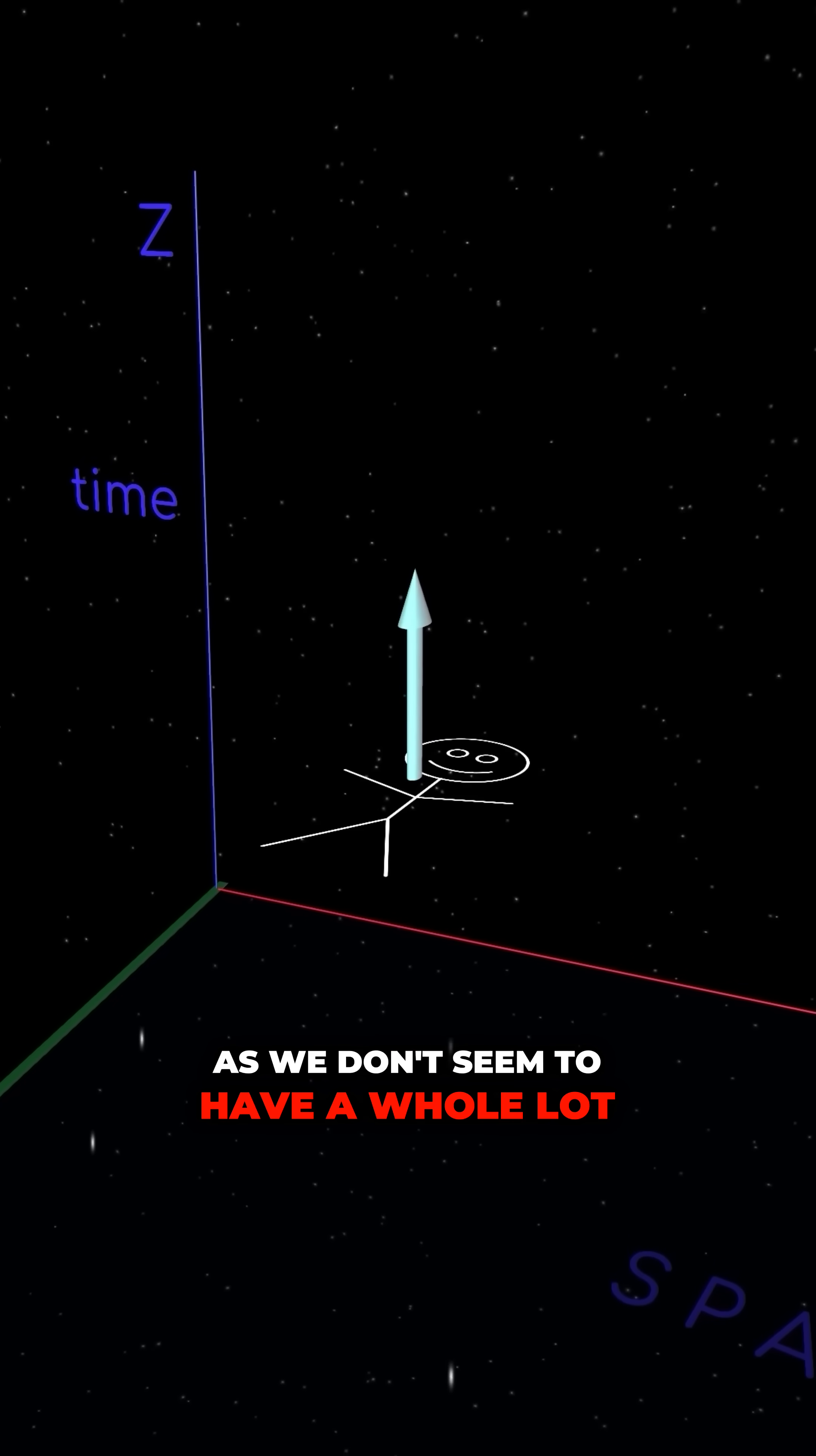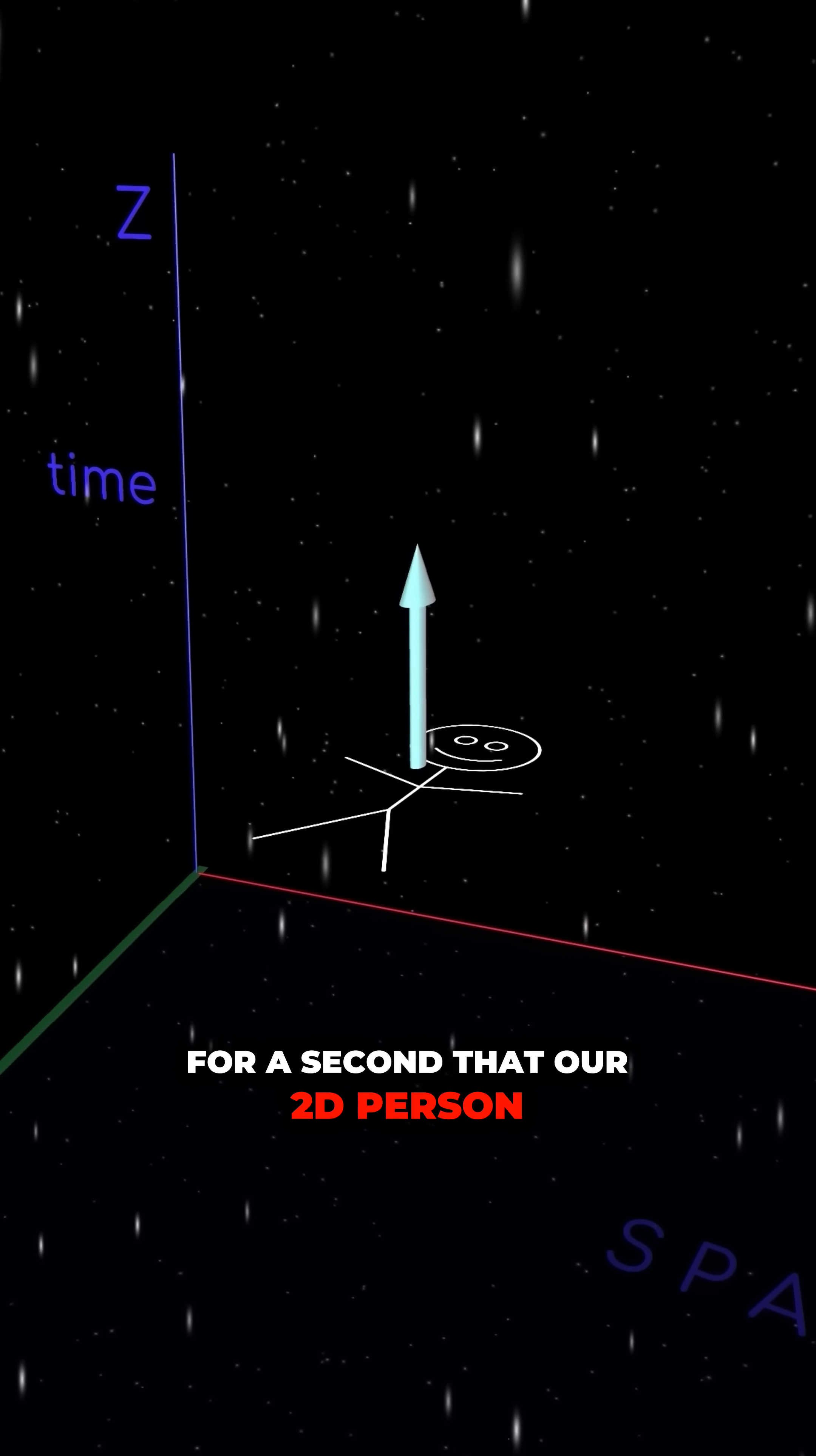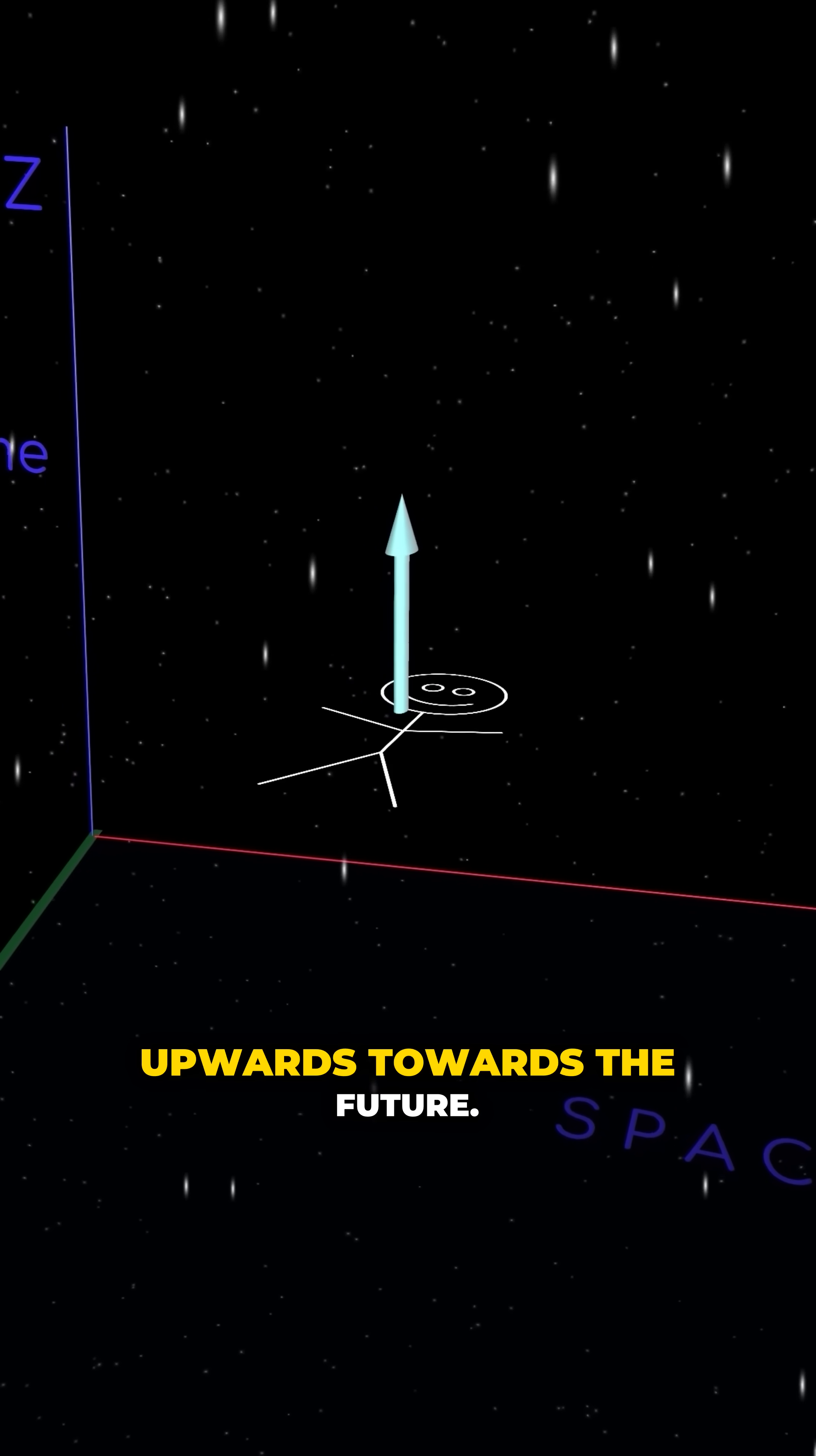As we don't seem to have a whole lot of control over our ability to travel through time, let's imagine for a second that our 2D person travels upwards at a constant rate, as if there is some consistent force or wind at play pushing them upwards towards the future.